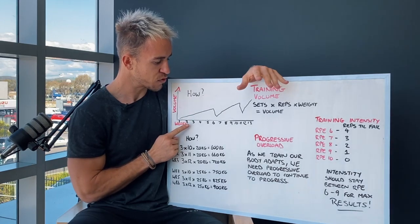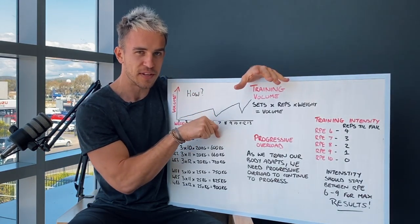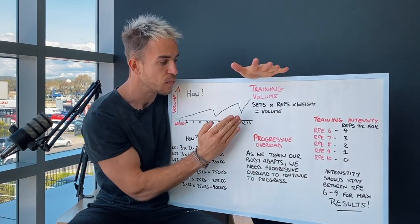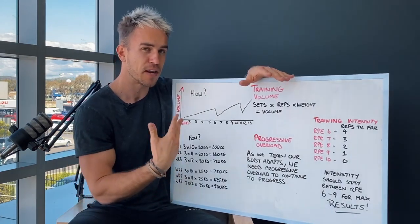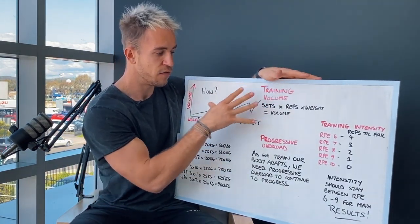So what happens is we try and increase and then after about six, seven weeks, we then drop down and then we look at trying to increase back up and then we drop down and then we increase and it's more about smarter programming. So that is training volume.